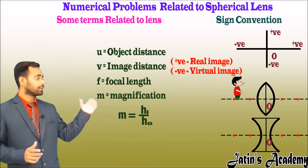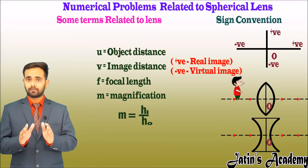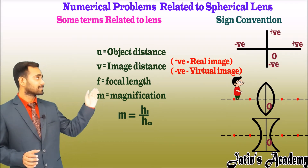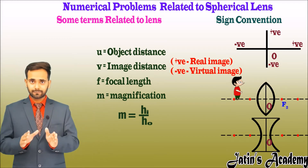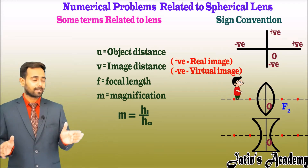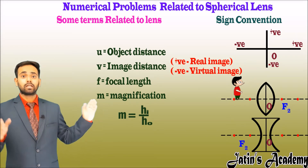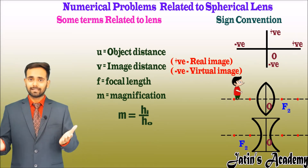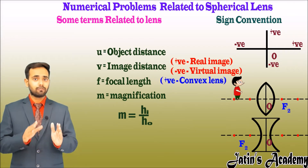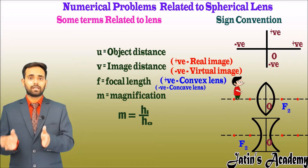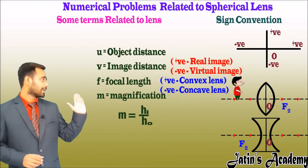For focal length f: in a convex lens, the focal point is on the right side, so f is positive. For a concave lens, f is negative. In numerical problems, if a convex lens is given, take f as positive; for a concave lens, take f as negative.